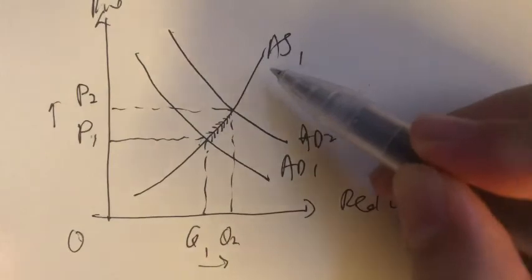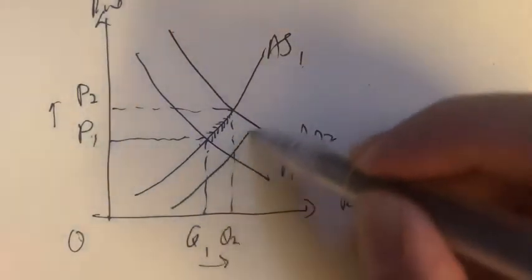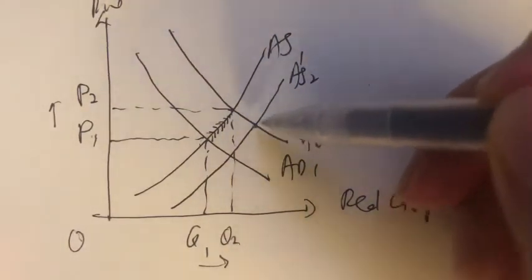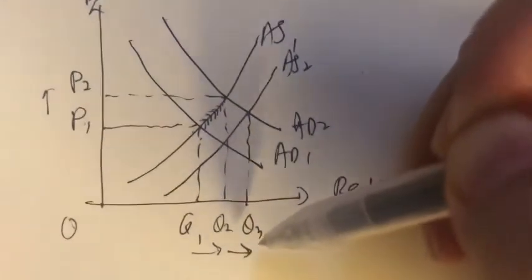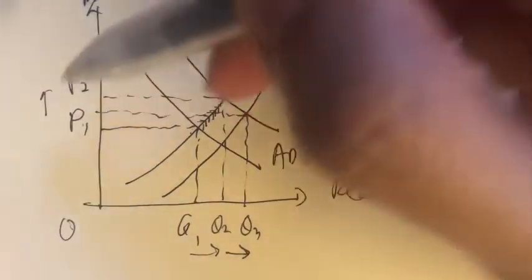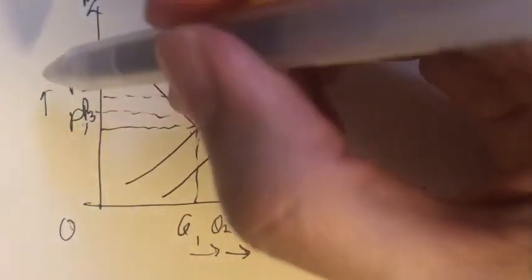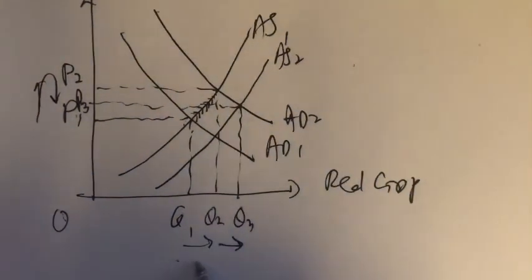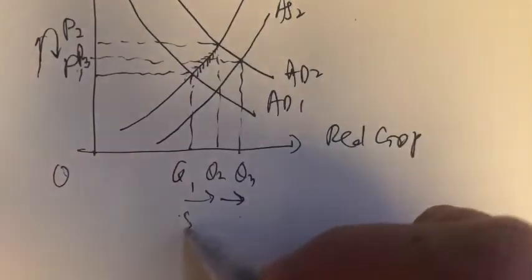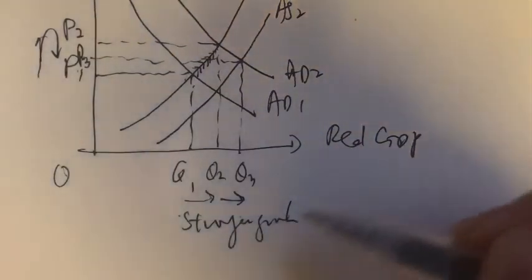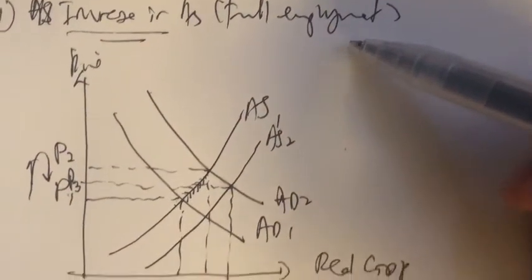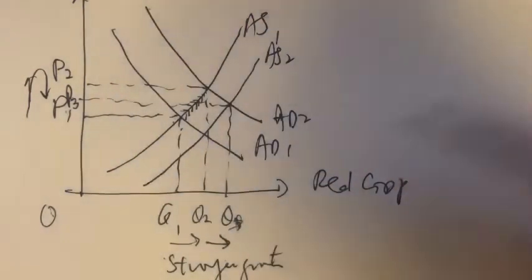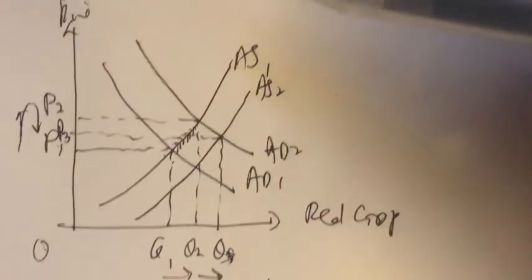So what happens now is the aggregate supply curve will shift to the right. We have a new equilibrium — not only more output, but prices wouldn't be as high as before. The final resting price is lower — it goes up, then rests back down, like a U-turn. We have quite a bit more output and stronger growth. This is what it means by achieving full employment — here it could be QF, or approaching full employment level. This is what it means when there's an increase in aggregate supply.